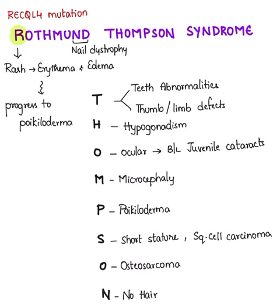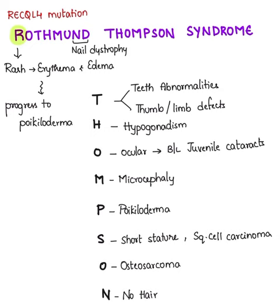O stands for osteosarcoma, which is the most common malignancy seen in this condition. N stands for no hair or absent hair. R stands for rash, which usually begins as erythema and edema, then later progresses to poikiloderma. R also stands for RECQL4 mutation. And D stands for nail dystrophy, which is also a common feature of Rothmund-Thomson syndrome.